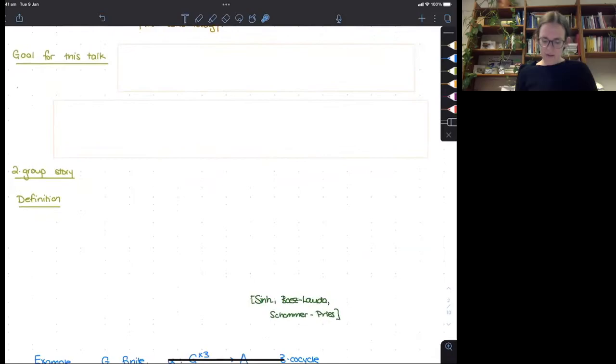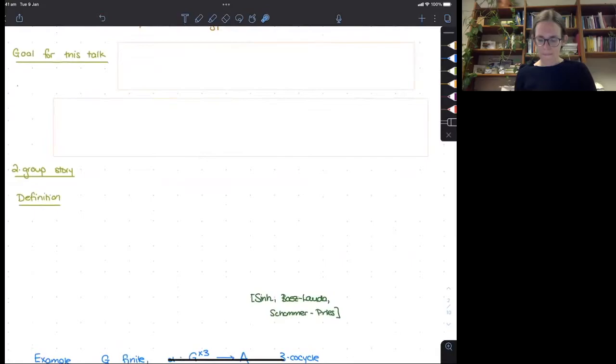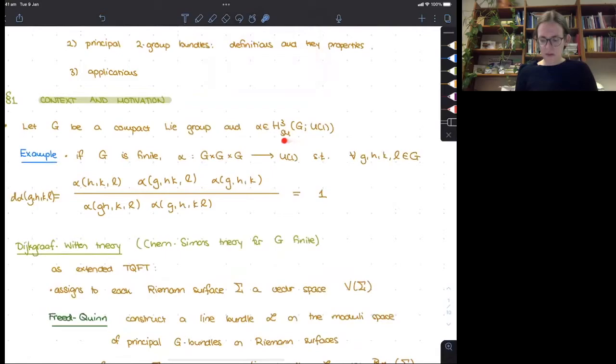For physicists, we usually think about Chern-Simons action for some gauge group. Is that the same G here? It's the same G. Dijkgraaf-Witten theory is really the case where your input Lie group happens to be a finite group. So it's really a toy model. In their paper, they do things with actions that would make physicists happy, but are confusing for me.